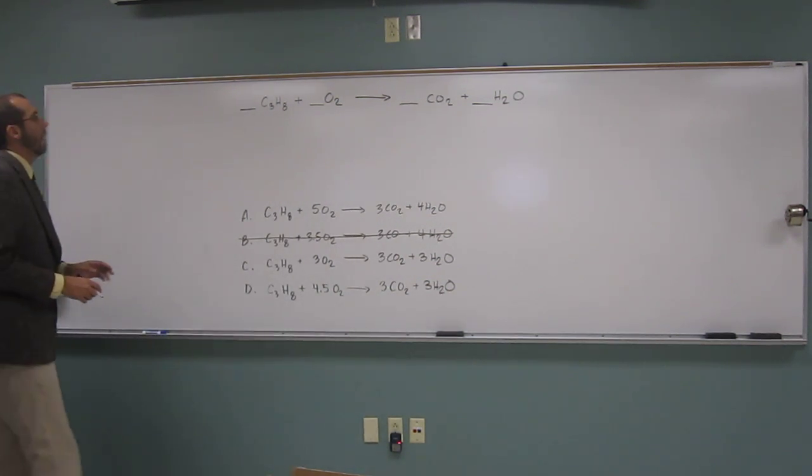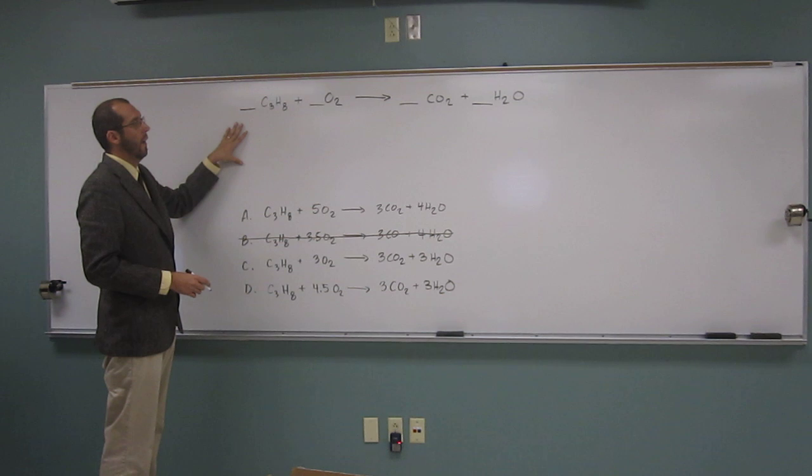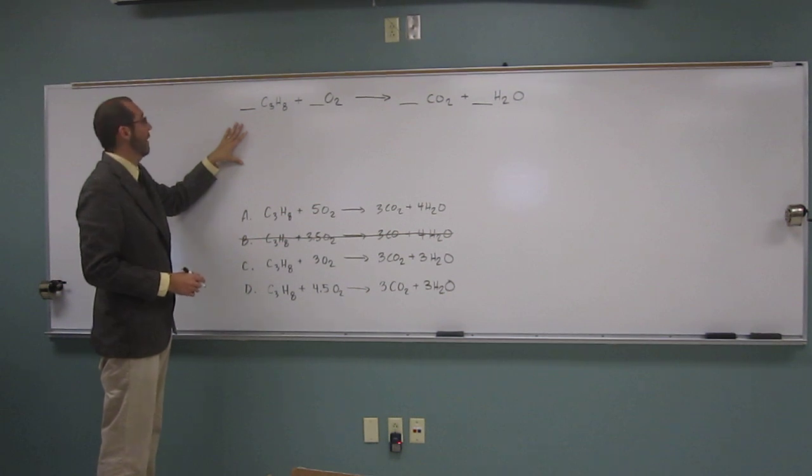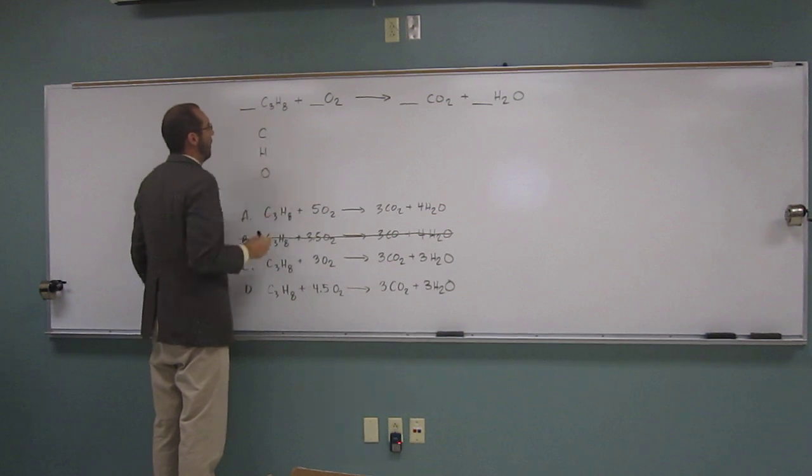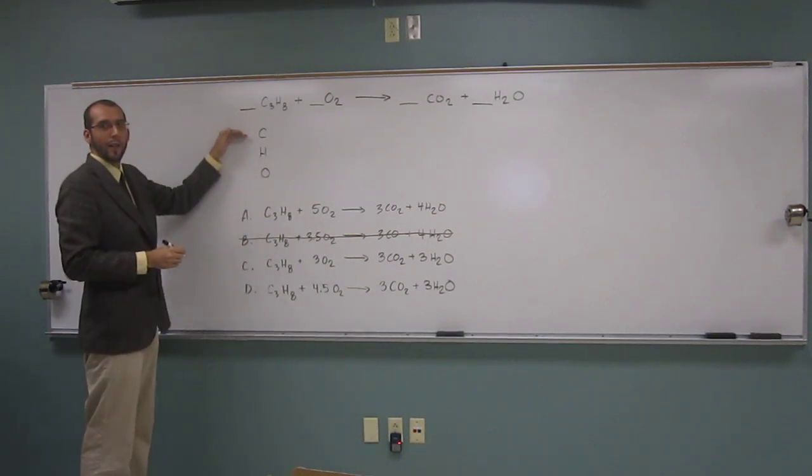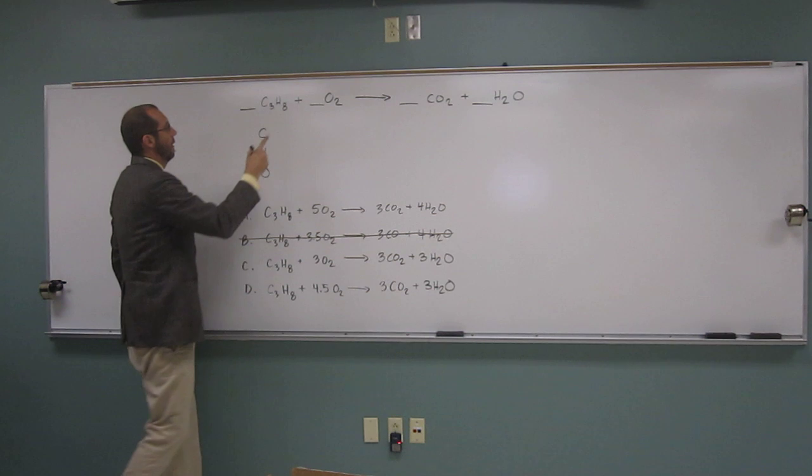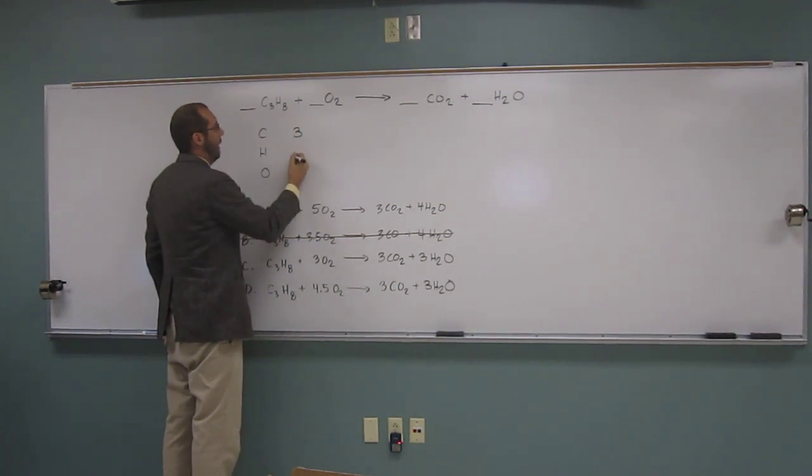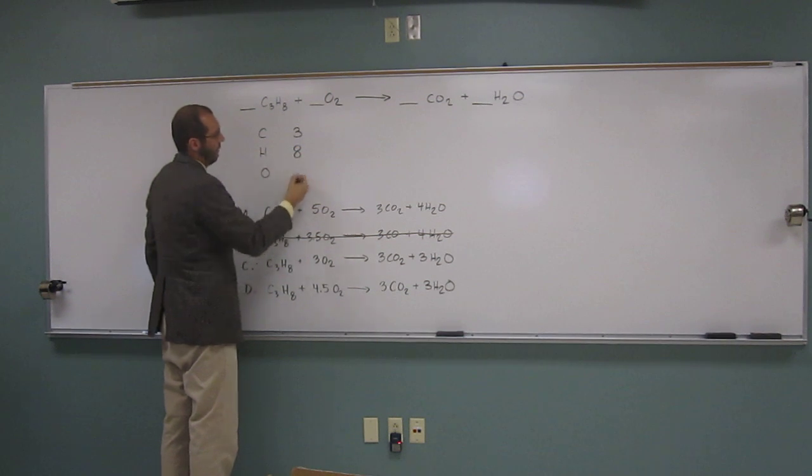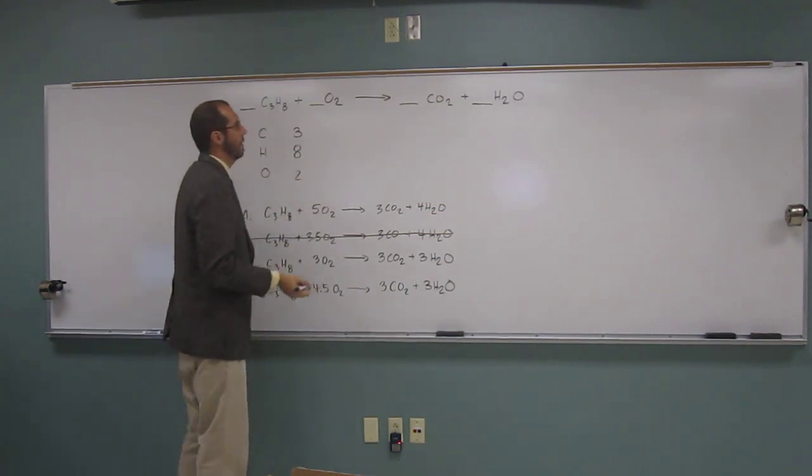So now, let's balance our reaction equation. So what do we do? We take C, H, and O. So remember, here we do C's and H's first. So how many C's do I have? Three. Three. And H's? Eight. Eight. And we can write the two oxygens as well.